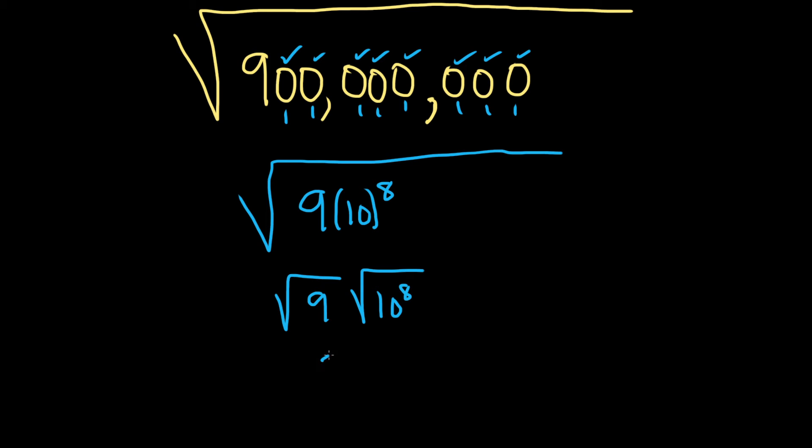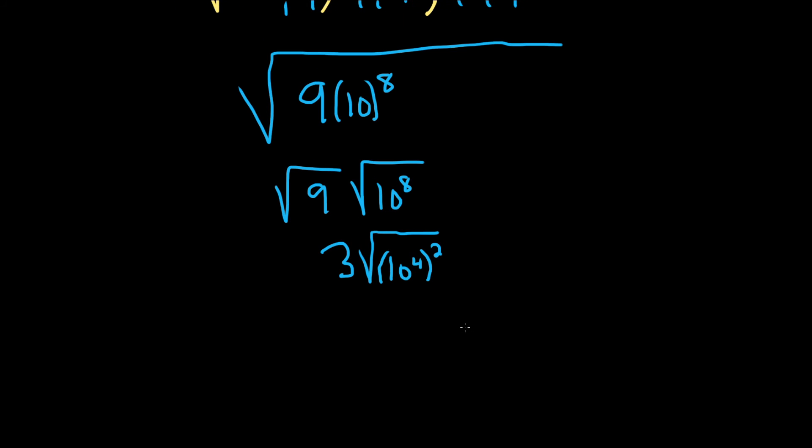The square root of 9 is 3. And when you take the square root of 10 to the 8th, what you can do is you can write it like this. It's really 10 to the 4th squared, right? Because you want to write it as something squared because the square root will get rid of the squared.